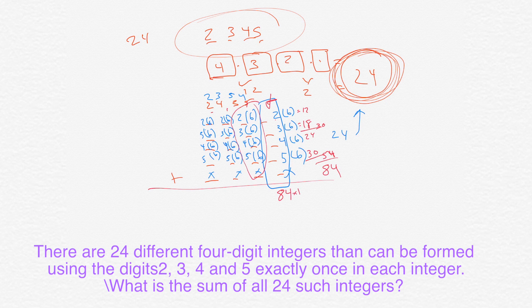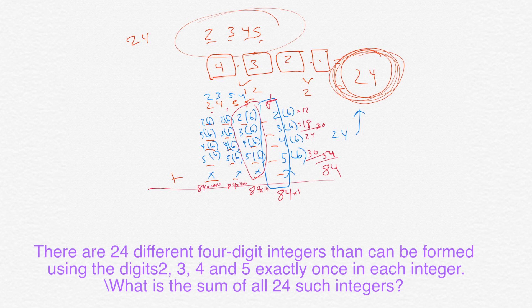And then in the tens column you're going to get 84 in the tens column — so think of it as 84 times 10. In the hundreds column, if you add up all those, you're going to get 84, and those are all in the hundreds column, so you'd multiply 84 times 100. And then obviously in the thousands column, you would get 84 in the thousands column, which would be 84 times 1,000.